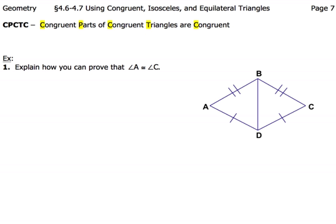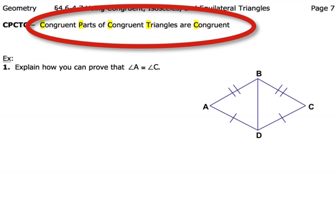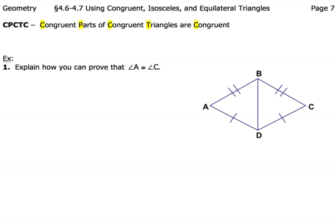The first thing I want you to do is write down this acronym: CPCTC. That stands for corresponding parts of congruent triangles are congruent. That should already be in your notes from somewhere earlier in this chapter, but just in case you don't have it, there it is one more time.